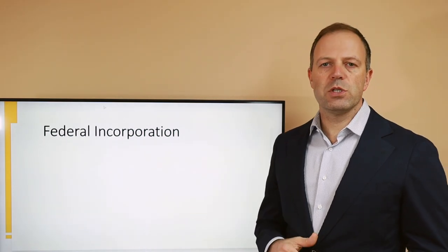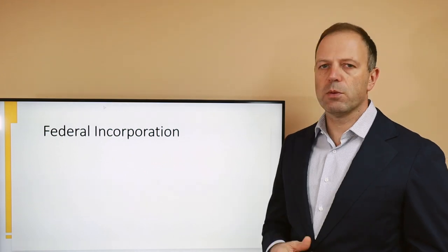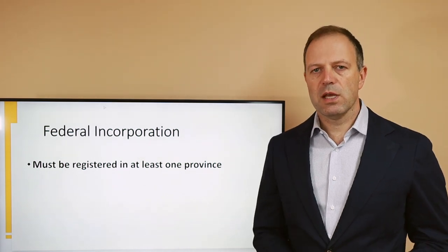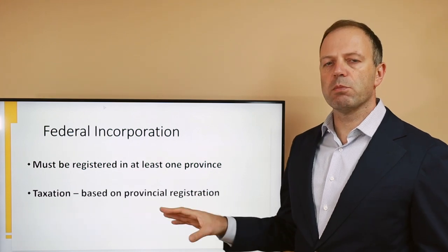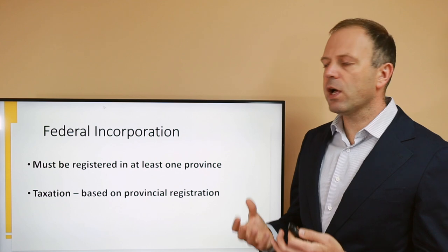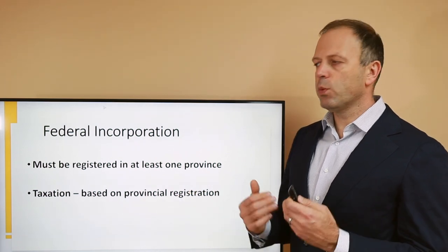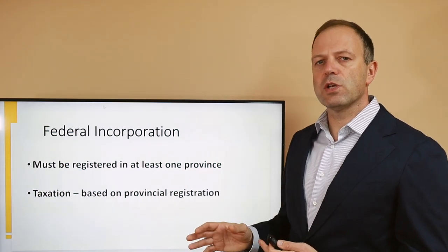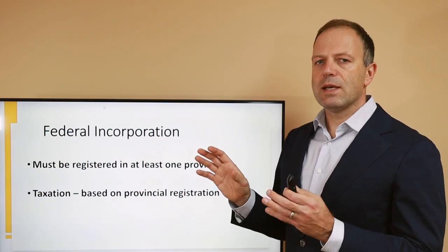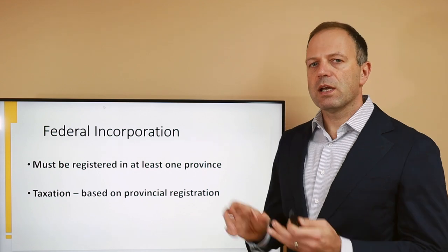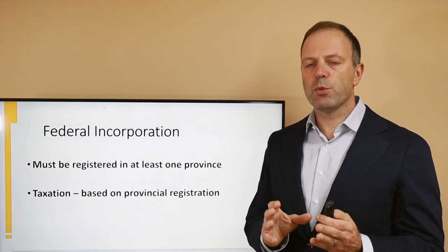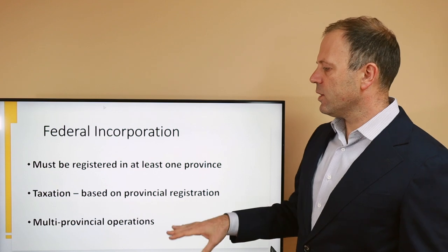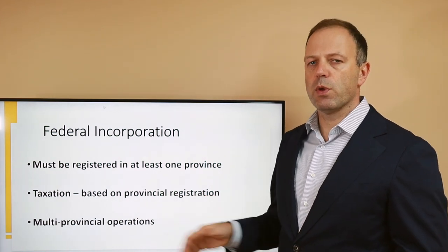We need to deal with extra-provincial registration when we do federal incorporation because the corporation must be registered in at least one province where it operates. The taxation system in Canada is based on a combination of federal and provincial portions. When we file our corporate income tax return, we declare in which province we generated the income and pay the tax rate applicable to that province. Provincial portions can be very different from one province to another, which is why we have to register extra-provincially, especially when operating in multiple provinces.